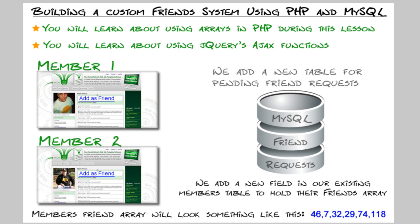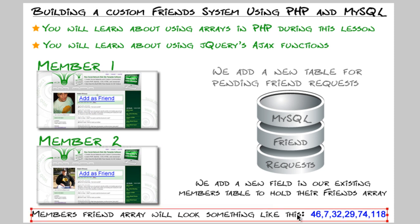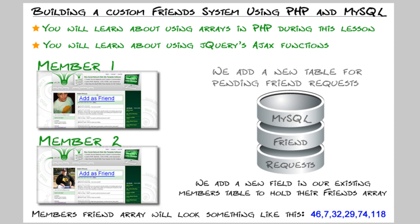We'll begin learning the programming to make all this possible in Part 2 of this series. There should be just a couple of videos since we'll be going into PHP arrays, jQuery's Ajax functions, and other nifty stuff — and I don't want to speed through it. If you want to jump straight to the code, you can get the source package from webintersect.com version 1.32 when it's available.